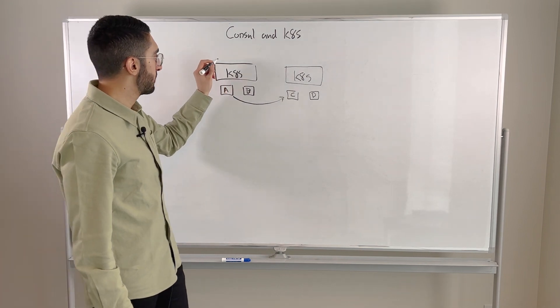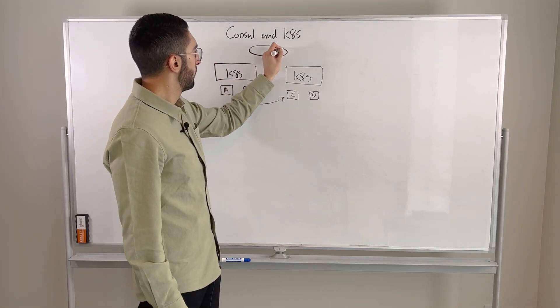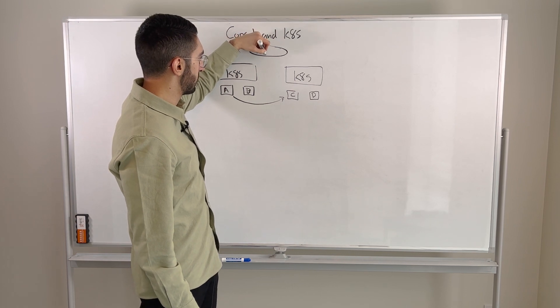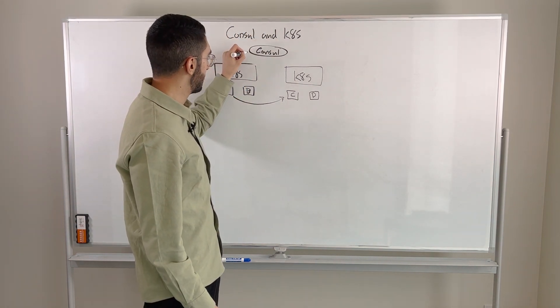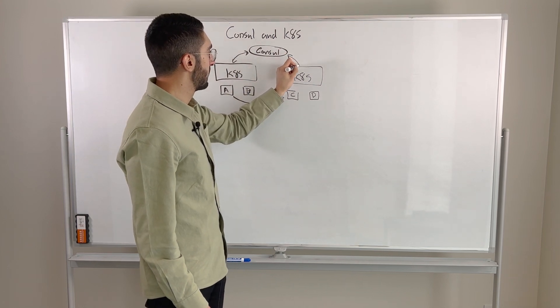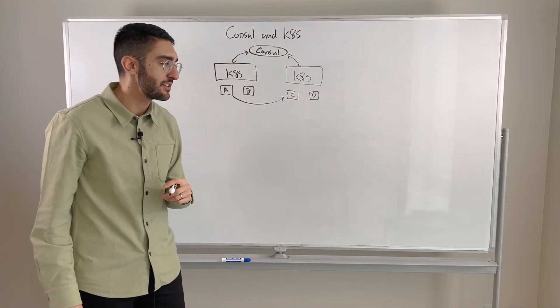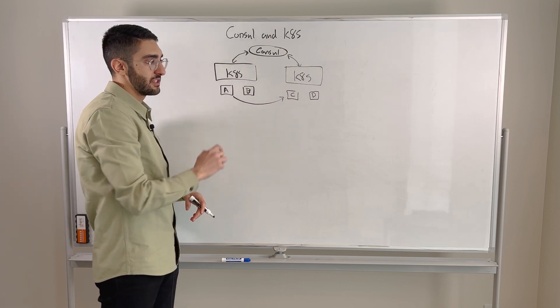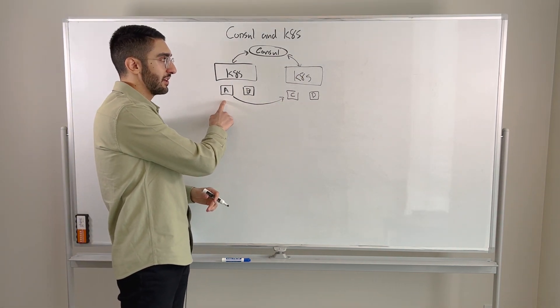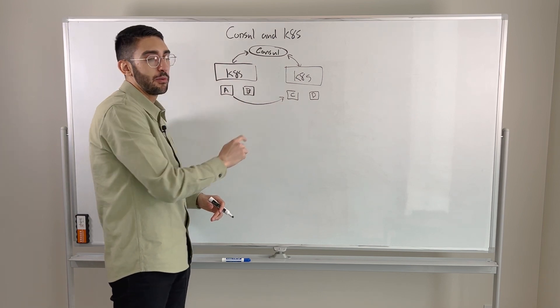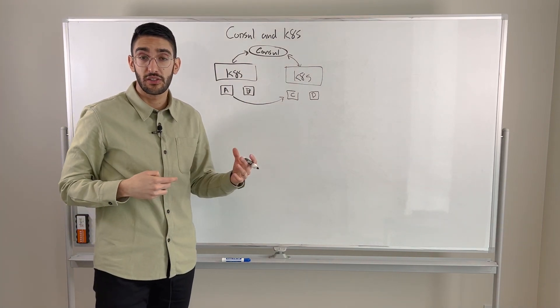So Consul can actually span all of that and act as a single consistent registry across multiple different clusters. We can actually sync and integrate with the native registry that Kubernetes has and create more of a global visibility of, hey, here's all of the different services. And that way, applications within a cluster can query Consul to be able to route and talk to services in a different cluster.